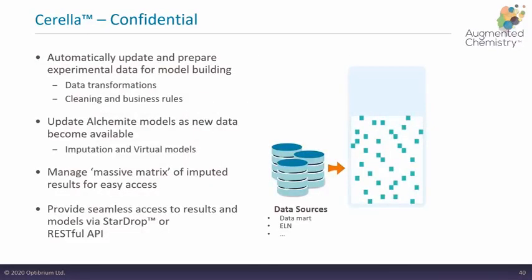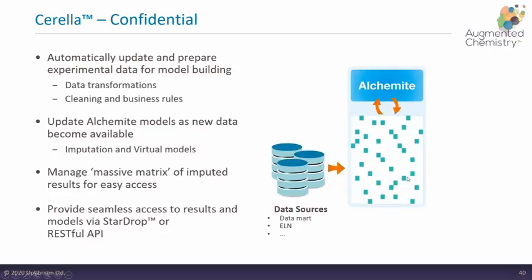Thank you, Ben and Tom, for a great description of that project. Alchemite is available as part of our augmented chemistry platform. At the moment we're working in collaboration with many organizations to apply Alchemite on a collaborative basis — filling in the gaps in a database, mining data to target high-quality compounds, identifying the most important data to generate, and helping prioritize experimental resources to select the best compounds.